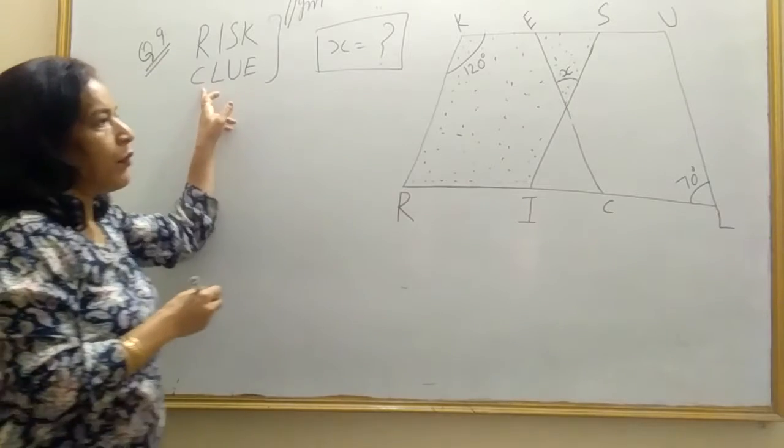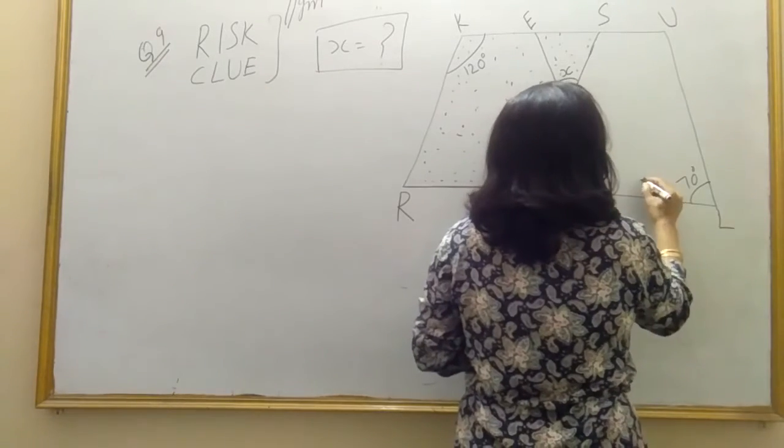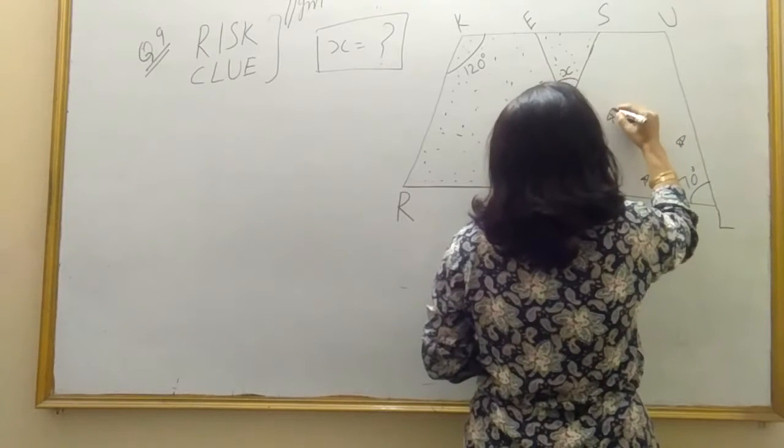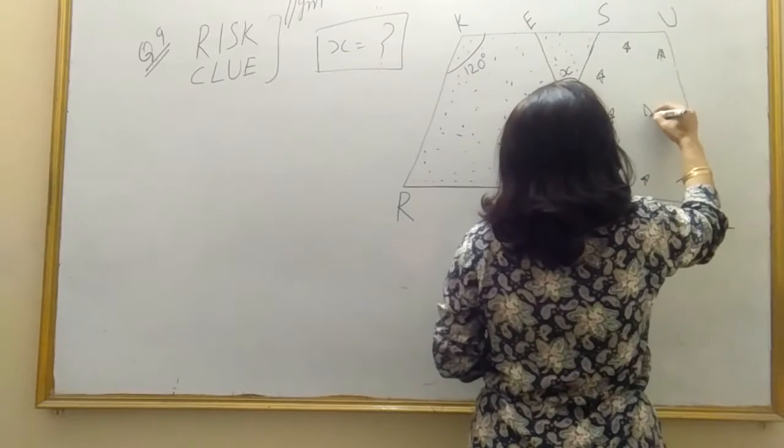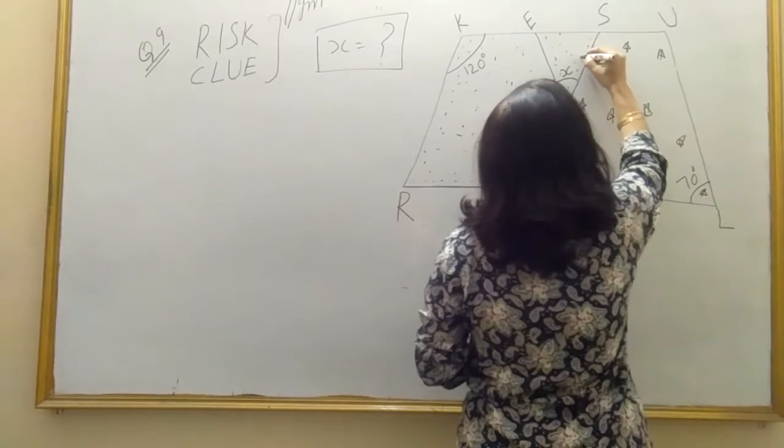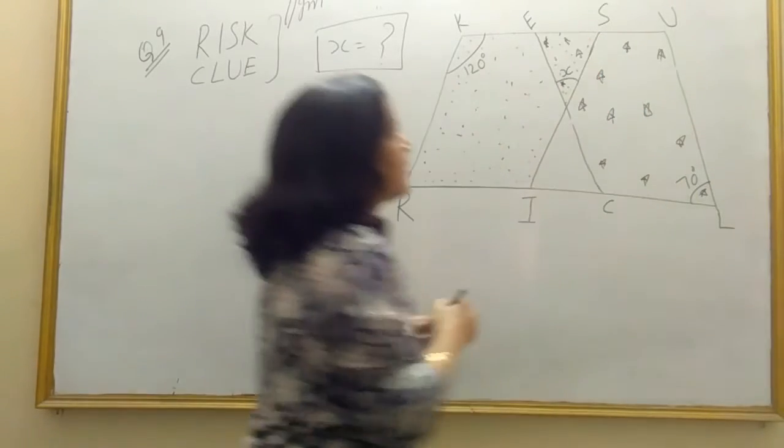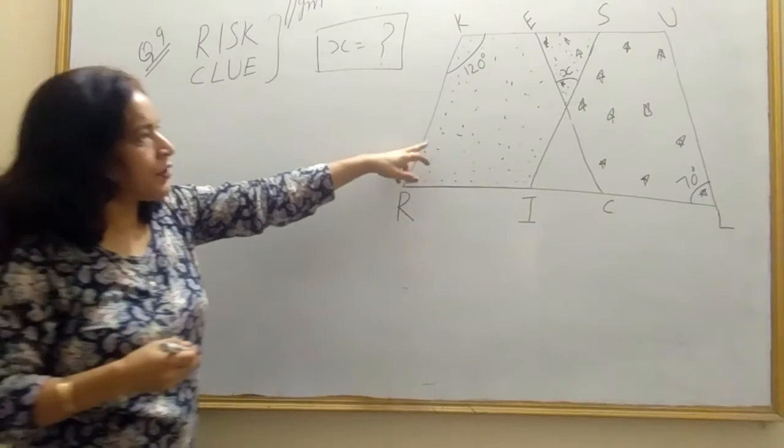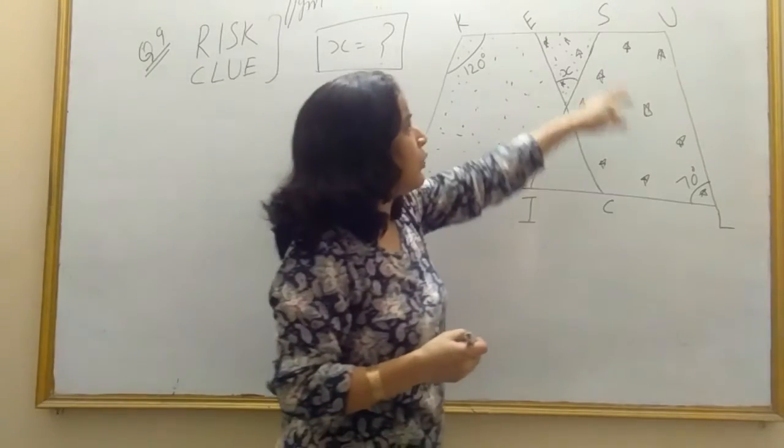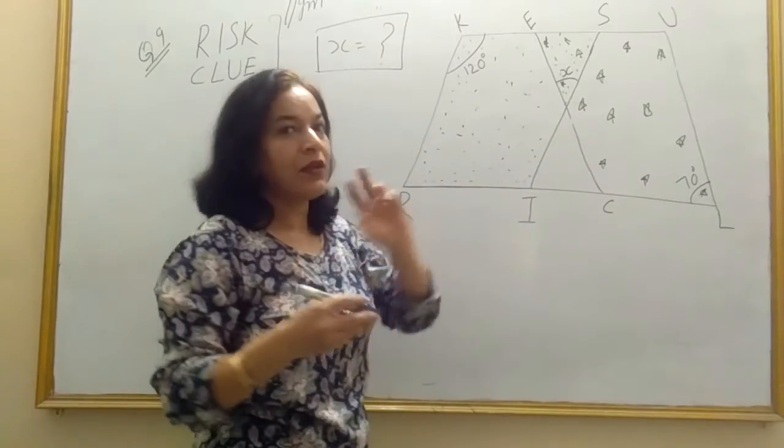Then another parallelogram, clue. I will put star. This is another parallelogram. One R-I-S-K with dots and another C-L-U-E, clue with star. And clear to you.